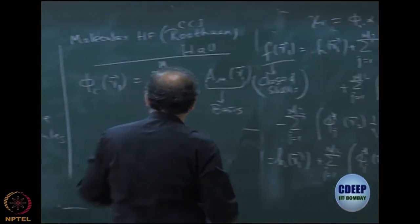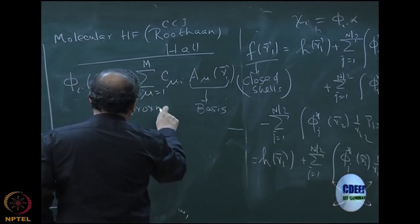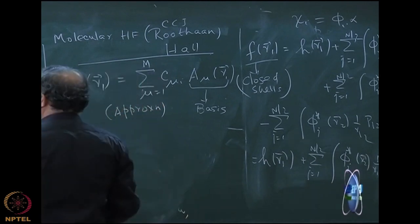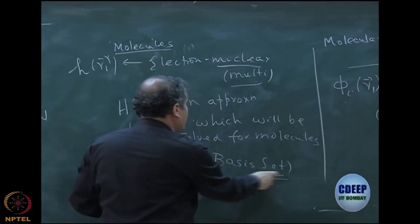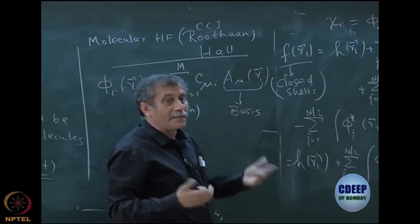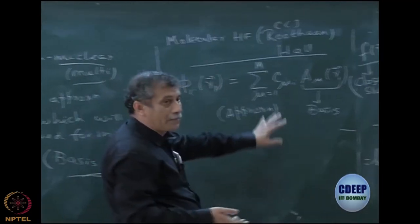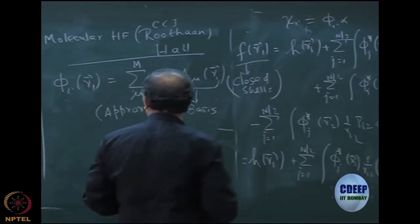One of them is Hartree-Fock of course. Right now I am trying to find this. So this is an approximation. As I told you, Hartree-Fock is an approximation, then the next approximation is a basis. I am going to come back to this later. What is a basis? How do I define the basis?